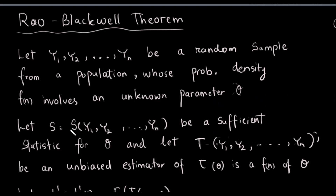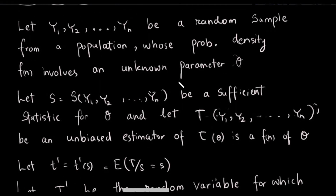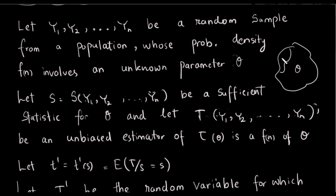We have a probability density function with a data parameter. We have a population of theta and data in random samples. There is a data parameter in random samples, and we will select the statistic from this data.